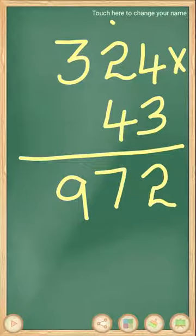Next you multiply the tens place number. Before that, put one 0 here.